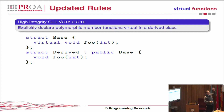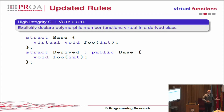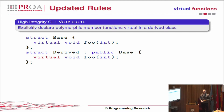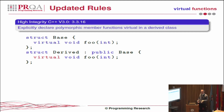In this very simple example, we've got a base class and a derived class which inherits from it. In the previous version of high integrity, the guideline was that we should document to people using the derived class that this function is in fact virtual, so they should add the virtual keyword to that class, because that documents it and now everybody knows.